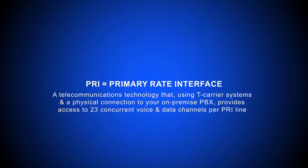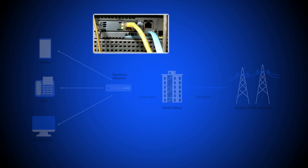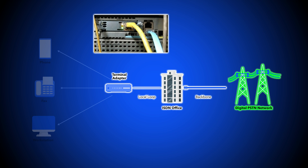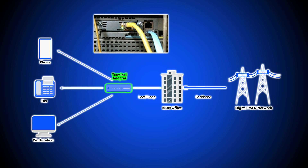PRI, or Primary Rate Interface, is a telecommunications technology that, using T-carrier systems and a physical connection to your on-premise PBX, provides access to 23 concurrent voice and data channels per PRI line. PRI was developed as an alternative to the traditional POTS, or plain old telephone service, network, which can only handle one phone call at a time. PRI works by using two pairs of copper wires, called a PRI circuit, to physically connect your PBX phone system to the PSTN, creating a dedicated network operating via duplex data transmission.